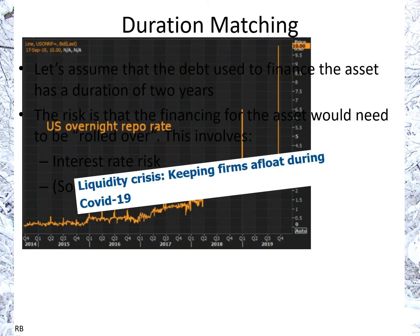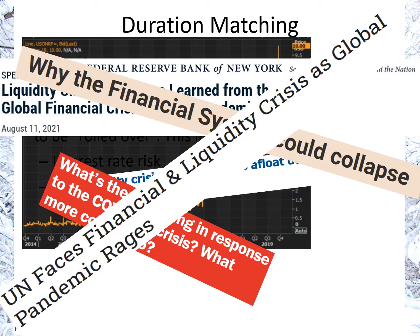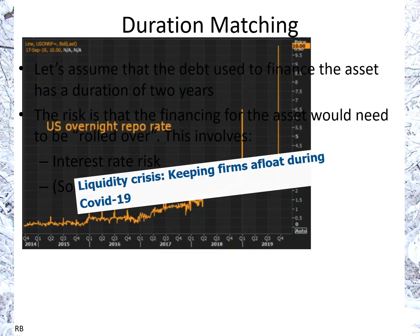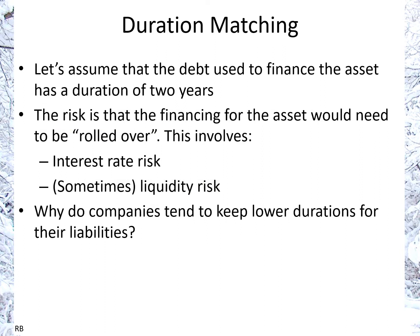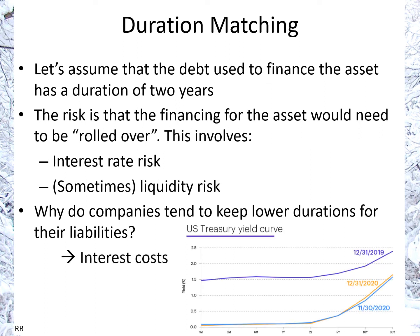The question is: why do companies tend to keep shorter durations for their liabilities than for their fixed assets? The answer is that short-term interest costs are generally lower. When you look at the cost of borrowing over a longer period, it costs more than borrowing short-term and rolling it over. The U.S. Treasury yield curve examples show how it changes over time, but in general longer-term interest rates are more expensive than shorter-term rates.